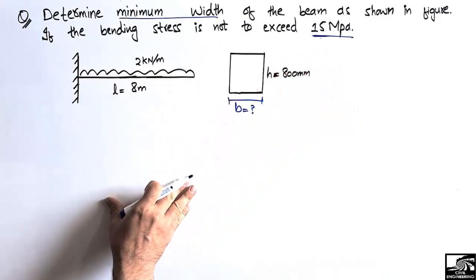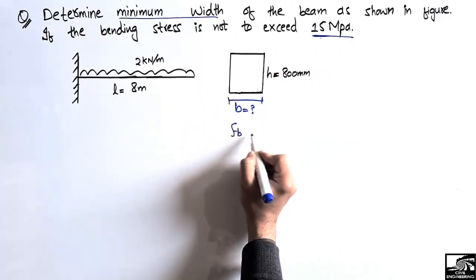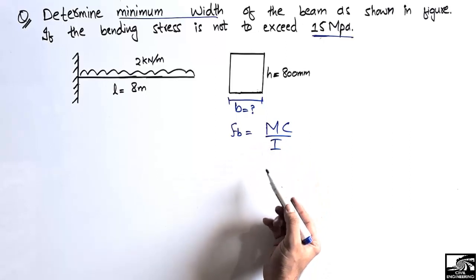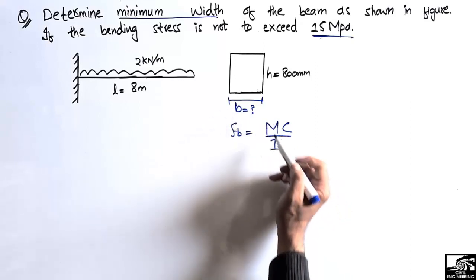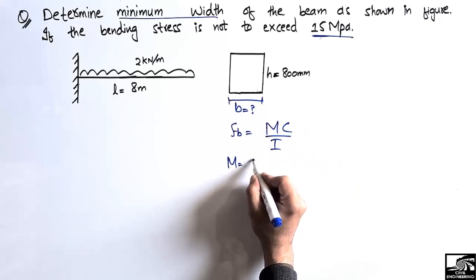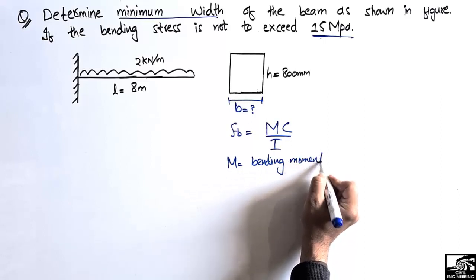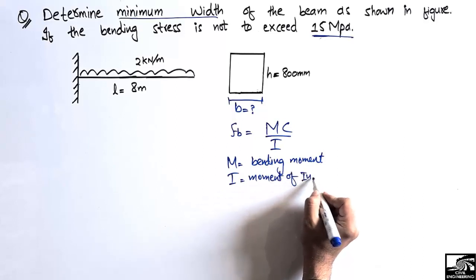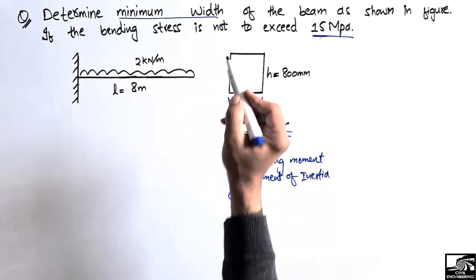For this question, first we need to know the bending stress formula. The bending stress is equal to MC over I. In this formula, M is the bending moment value at the location where you want to find the bending stresses, I is the moment of inertia, and C is the distance from the neutral axis of the beam to the extreme portion of the beam.